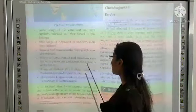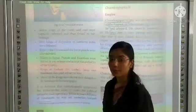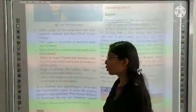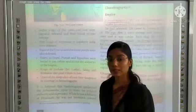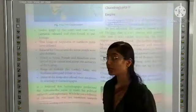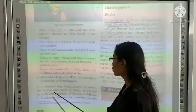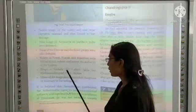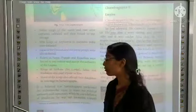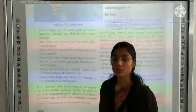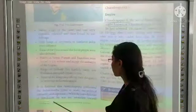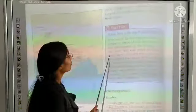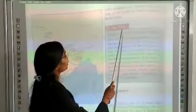Kings of Sinhala (Sri Lanka), Shakas and Kushanas also gave tribute to Samudragupta. Many of the kings also offered their daughters in marriage to Samudragupta. It is believed that Samudragupta performed the Ashwamedha Yajna to assert his political authority and supremacy. While he was a follower of Hinduism, he was not intolerant towards other religions. He allowed the Buddhist king of Sri Lanka to build a monastery at Bodh Gaya.